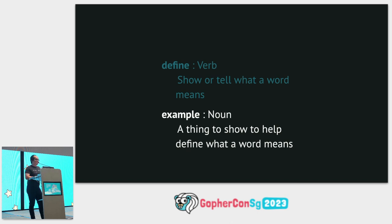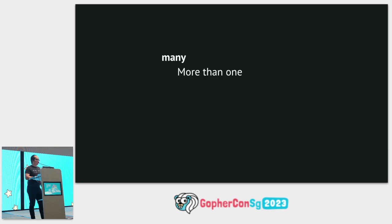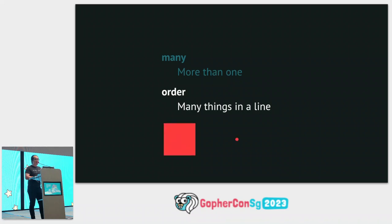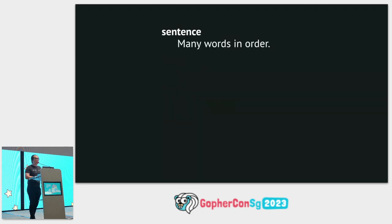Now let me define more things. Many means more than one. Order means many things in a line — first the square, then the dot, then the line. That's the order. A sentence is many words in order.